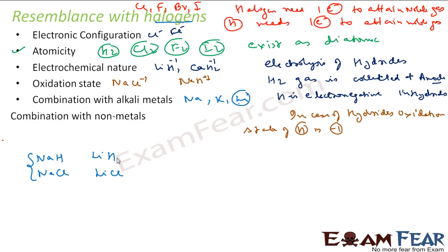The next is the combination with non-metals. So let us take some non-metals, we can take carbon, silicon. Combine carbon with halogen becomes CCl4, carbon with hydrogen is CH4. Similarly silicon with chlorine is SiCl4, silicon with hydrogen is SiH4. So if you see the pattern is same, combination with non-metals.